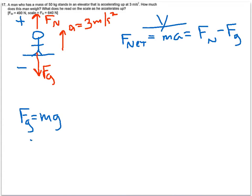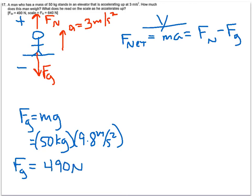So here we know the mass is 50 kilograms. G is always 9.8 meters per second squared. Make sure it's positive in this unit. And that's going to make our force of gravity equal to 490 newtons. And that's one answer.